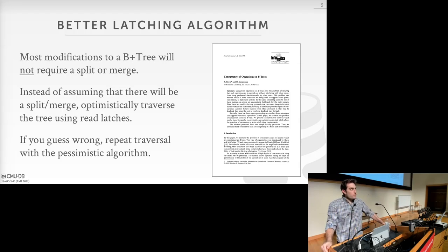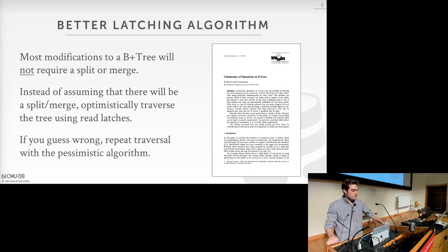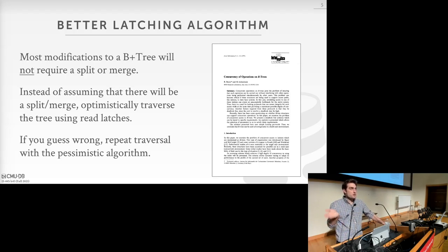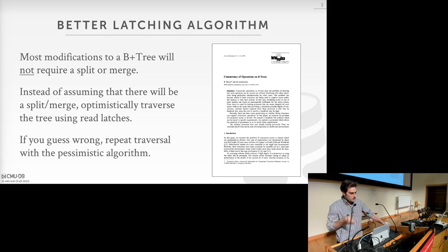If we guess wrong and actually need to propagate rebalancing up the tree, we just abort the operation and start over from the beginning, this time acquiring write latches as we repeat the traversal.